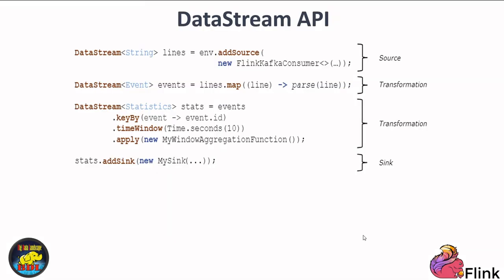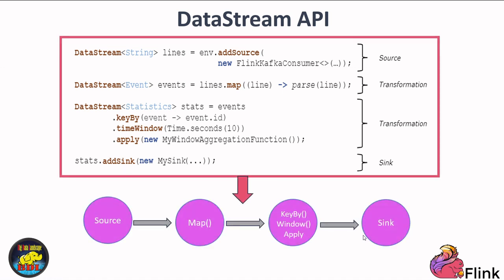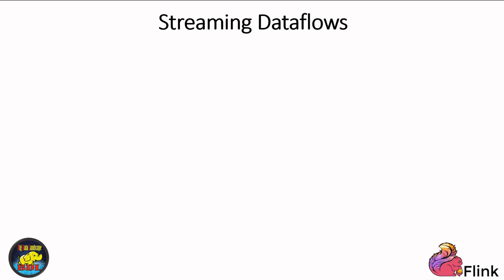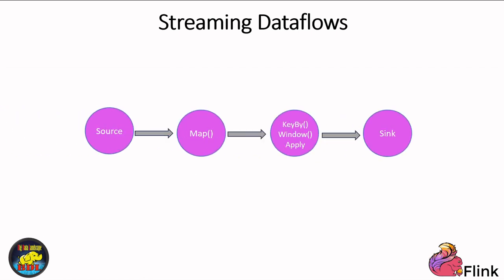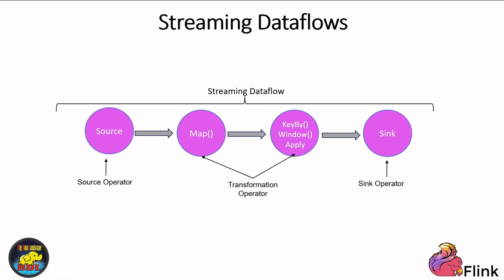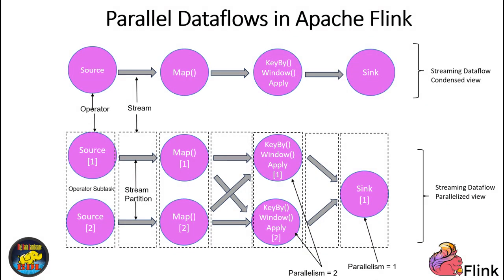In Apache Flink, parallel data flows are the backbone of high-performance stream processing. In Flink, data streams are divided into stream partitions — independent segments of the stream processed separately. Within each operator, there are multiple operator subtasks running independently, possibly on different machines or threads. The number of subtasks defines an operator's parallelism level, and different operators within the same program can have varying levels of parallelism. There are different dataflow patterns: one-to-one streams maintain the order and partitioning of elements, ensuring consistent processing. Redistributing streams, on the other hand, change data partitioning to allow for various transformations, though ordering is preserved only within specific sub-task pairs.